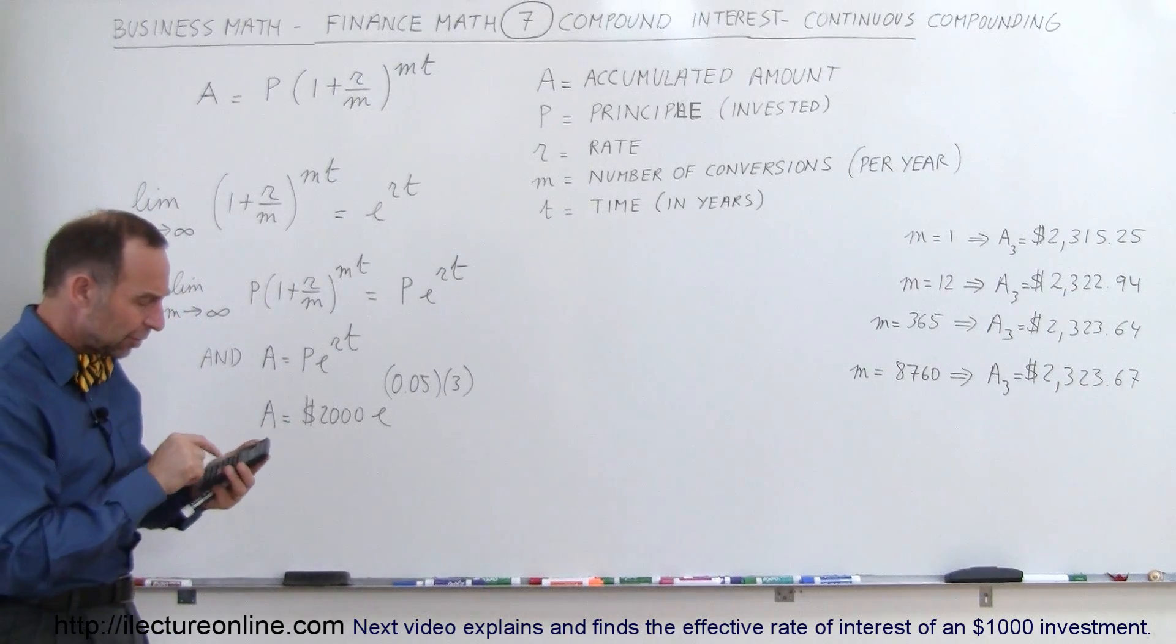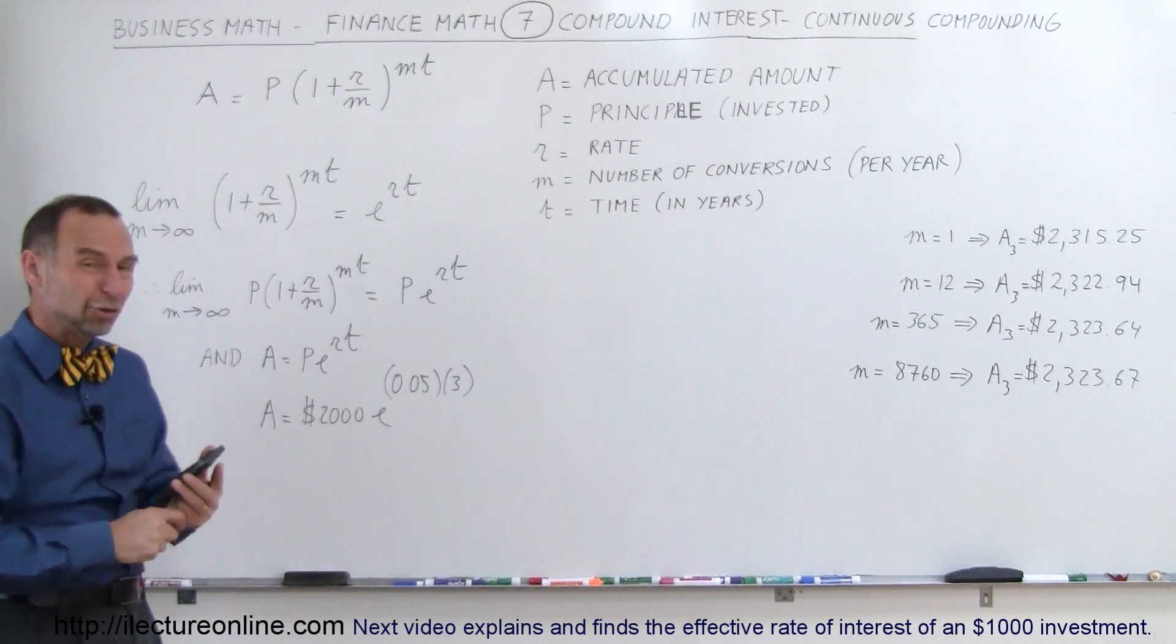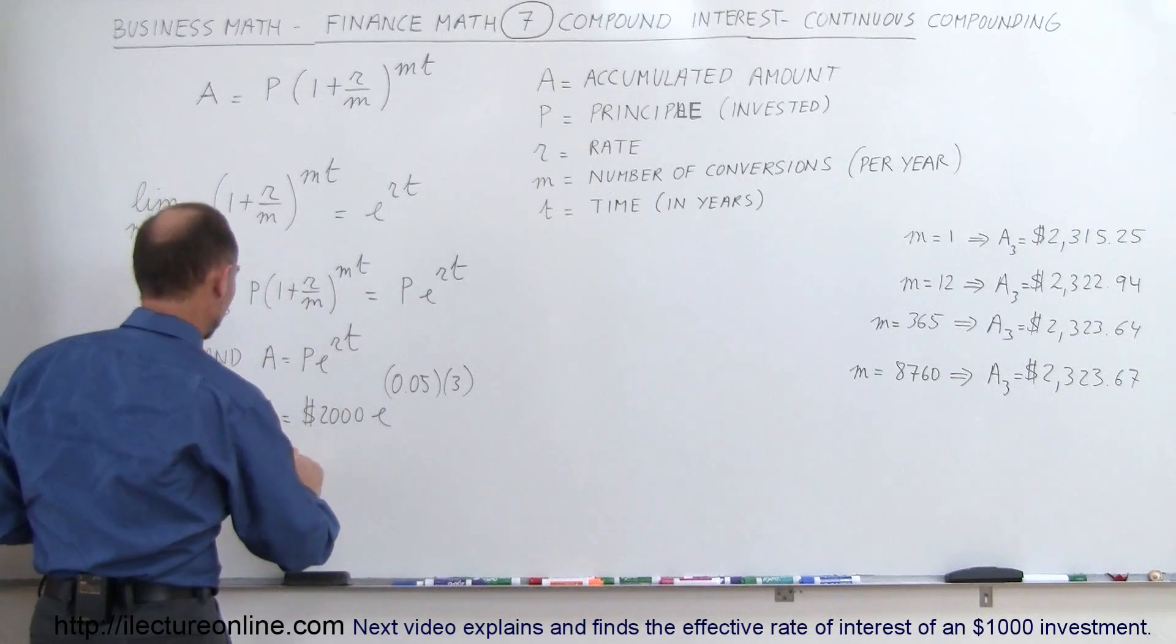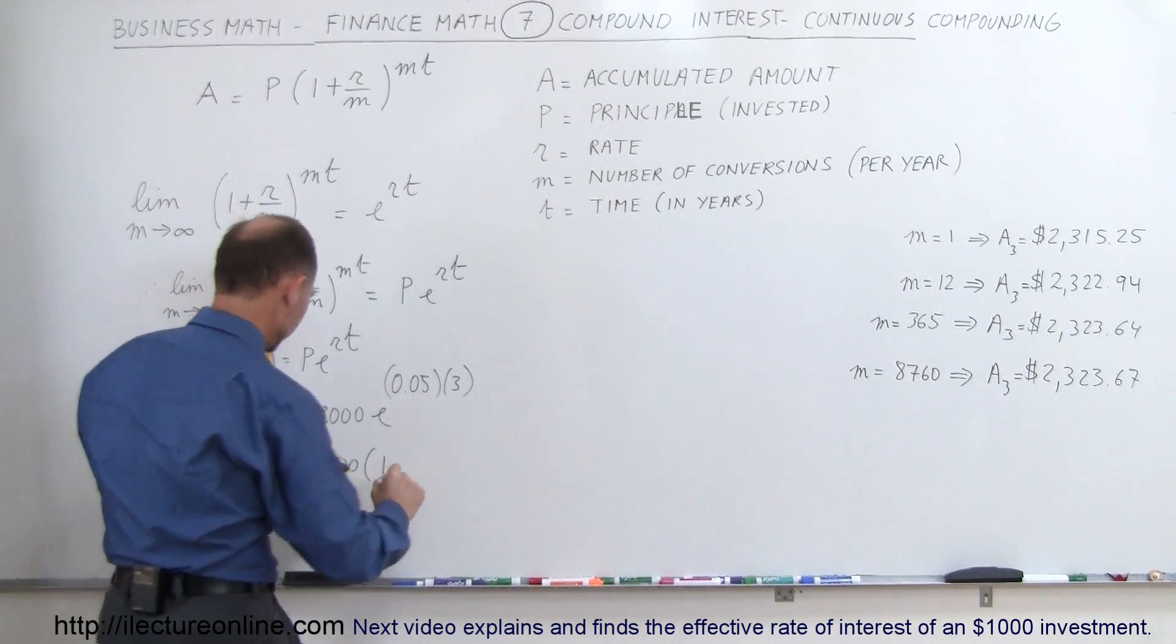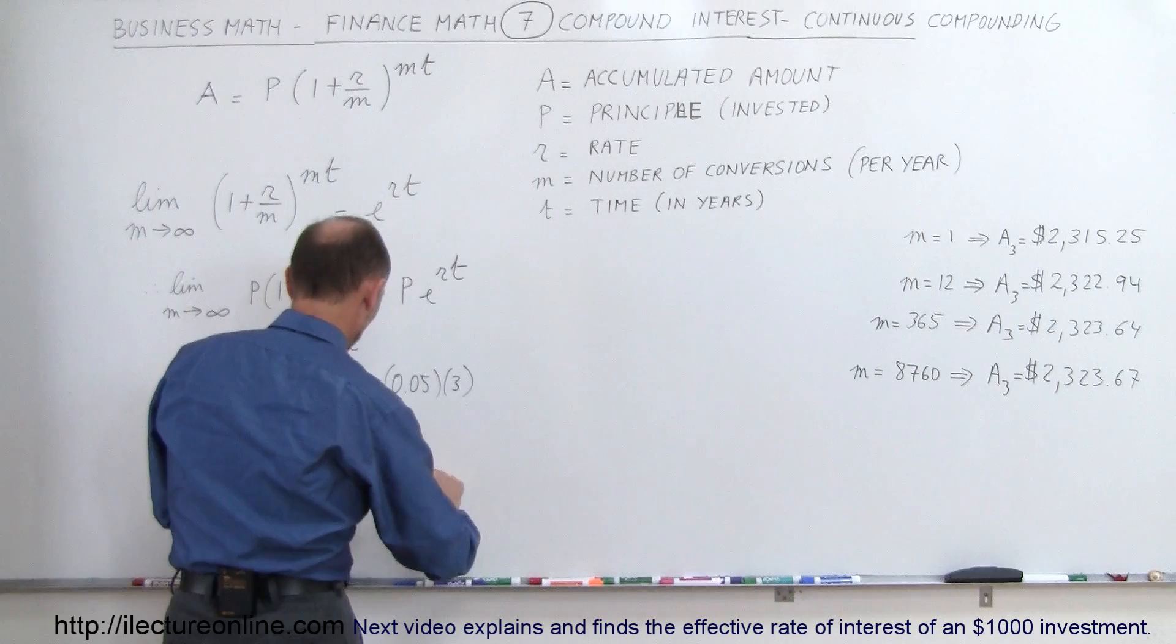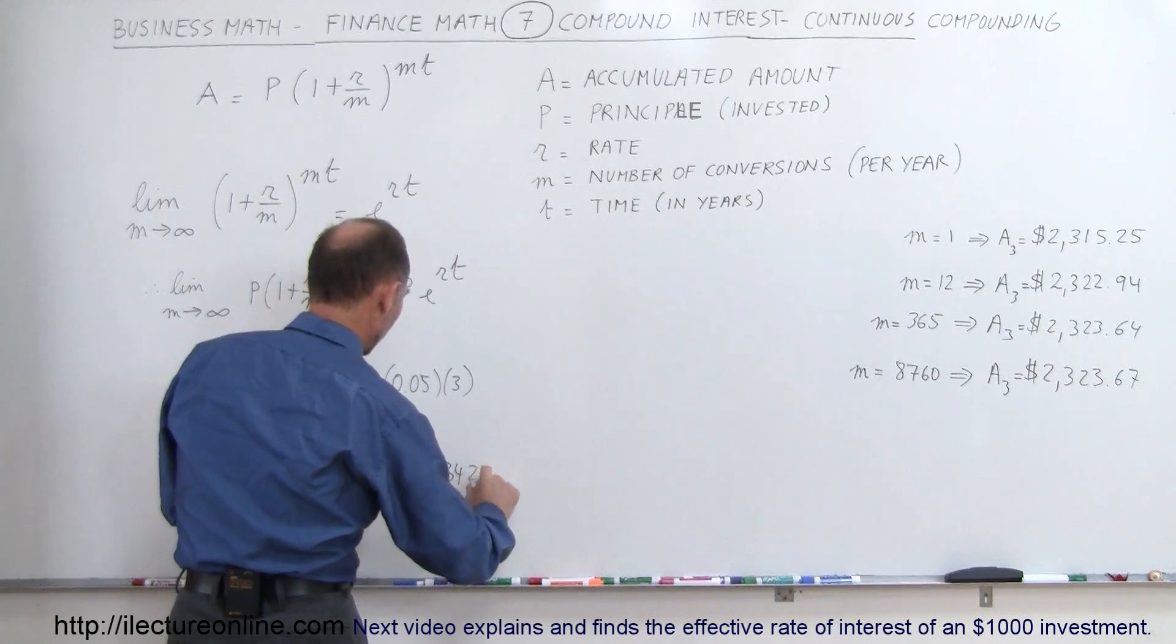So you find your E to the X button on your calculator, E to the X, and then you multiply that. Let me show you what you get so far. So this will give you 2,000 times 1.161834243.